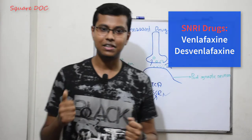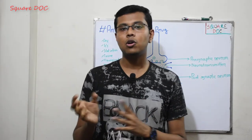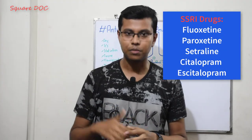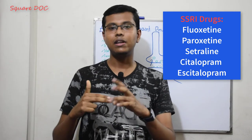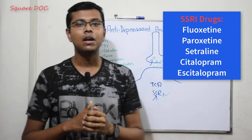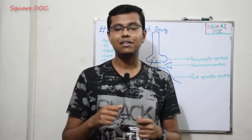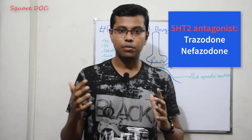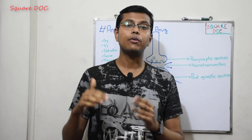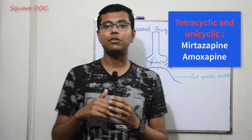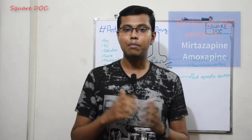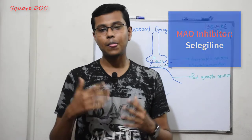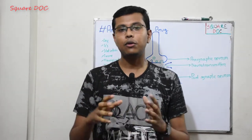Then we have the SSRI — Selective Serotonin Reuptake Inhibitors. The drugs include fluoxetine, paroxetine, sertraline, citalopram, and escitalopram. There is also a minor classification: 5-hydroxytryptamine antagonist drugs — trazodone and nefazodone. Other classes include tricyclic, tetracyclic, and unicyclic antidepressants — amoxapine and mirtazapine — and Monoamine Oxidase Inhibitors (MAOIs), specifically selegiline. This covers the antidepressant drug classification.